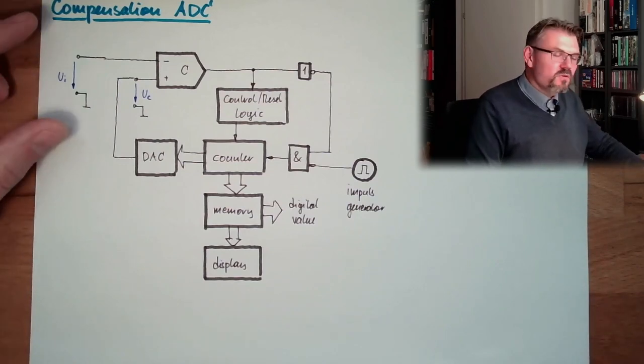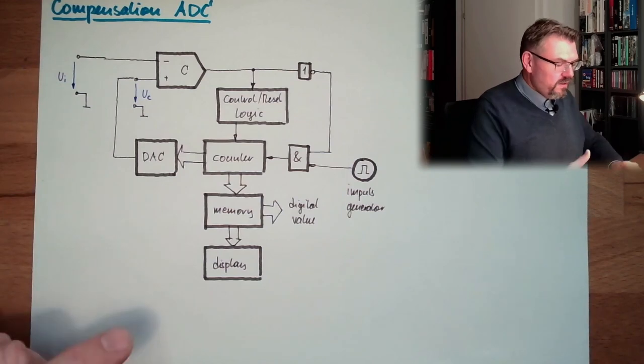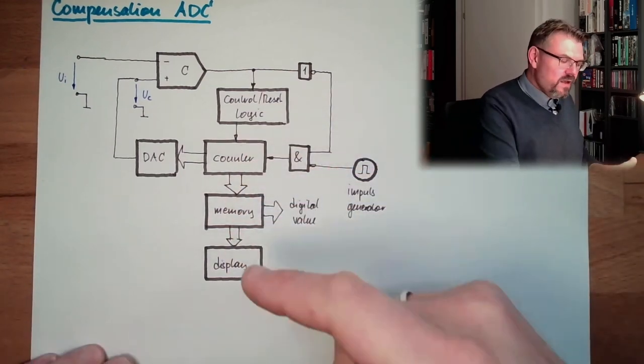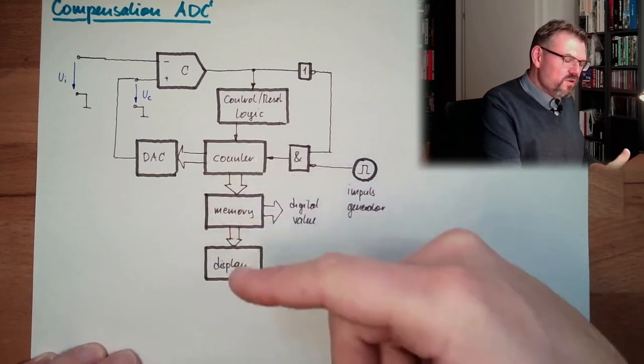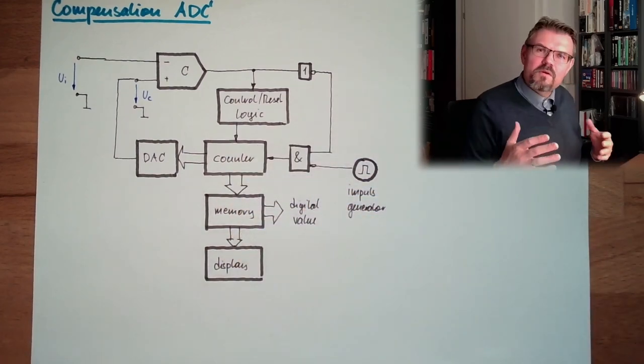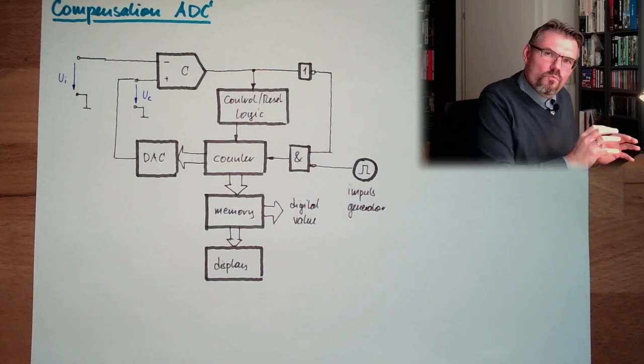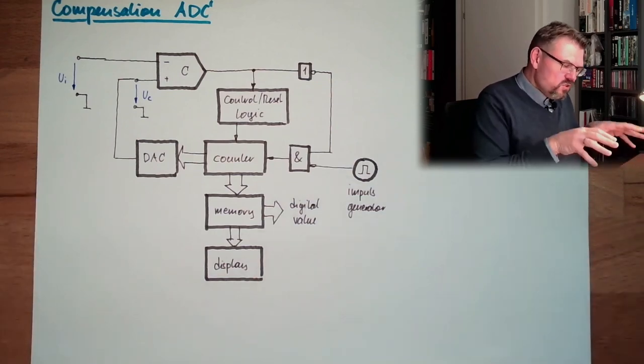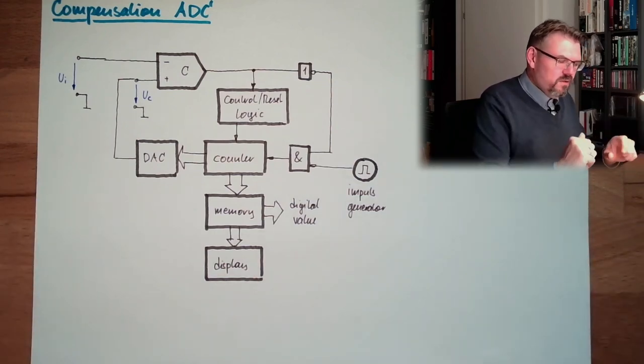And what happens if the input voltage is too high? Well, then the counter will have an overflow and start at zero again. It will never be triggered to the memory. So the memory is always holding the last value. I don't have to take care about that. This is automatically, this is already built in in this logic.